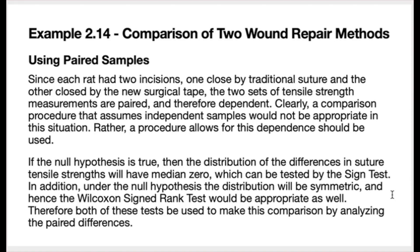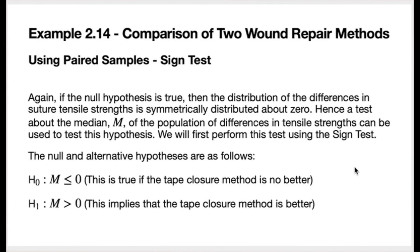Both tests will be used to make this comparison by analyzing the paired differences. Using the sign test, the null hypothesis is that cap M is less than or equal to zero — true if the tape closure method is no better than the suture closure method. The alternative hypothesis is that the median of the population of differences is greater than zero, corresponding to the tape closure method being better. If the boundary condition of the null hypothesis is true, the test statistic has a binomial distribution with n equal to 10 and p equal to 0.5, with sampling distribution symmetric about its mean of 5.